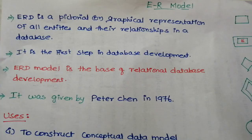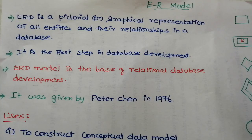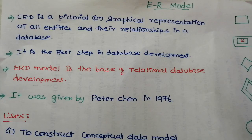For example, one student entity, project entity. Student is a separate entity, project is a separate entity. The relationship existing between them, described through a picture, is called an Entity Relationship Diagram.